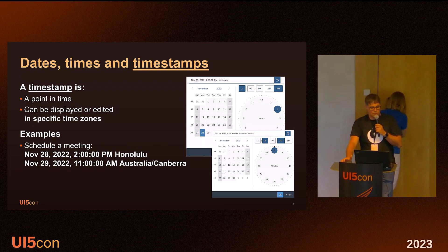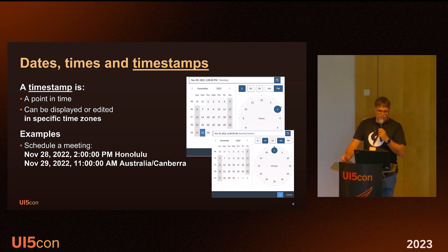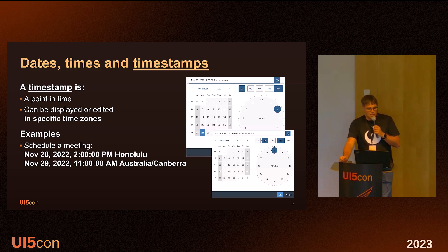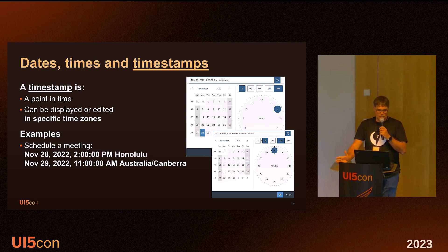The only thing where time zones are relevant are timestamps — a point in time that can be displayed or edited in a specific time zone. For example, if I schedule a meeting, the 28th of November 2022 at 2 PM Honolulu time is the same point in time as the 29th of November at 11 o'clock in the morning in Australia, Canberra. For dates and times, the time zone plays no role; only timestamps are time zone related.